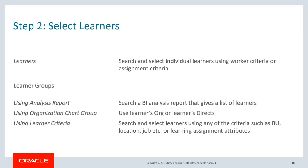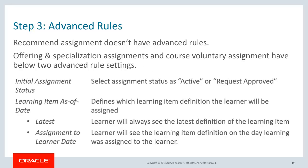Step two of assignment creation is to select the learners or group of learners. To select individual learners, use worker criteria or search learning assignments. To select learner groups there are three ways: use BI analysis, use org hierarchy, or use learner criteria based on worker attributes or learning assignment attributes. Step three is advanced assignment rules, which does not apply to recommend assignments. Offering and specialization assignments and course voluntary assignments have two advanced rules: initial assignment status — which can be active or request-approved — and learning item as-of date, which defines which definition of the learning item the learner will see.